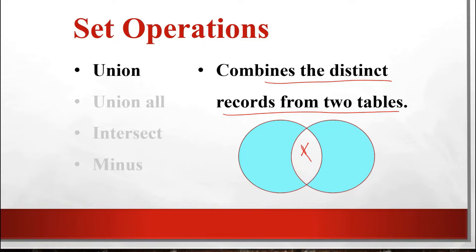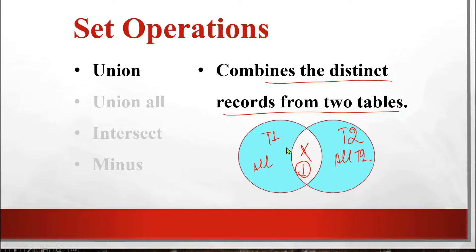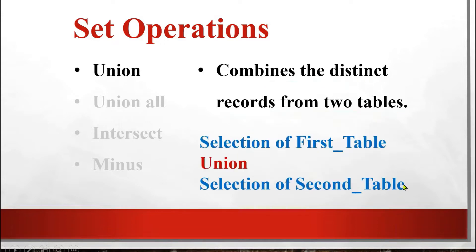Common records will appear only one time. All distinct records from table 1 and all distinct records from table 2 will be combined, and common records appear only once. The syntax for UNION is: the query selecting columns from the first table, then the keyword UNION, then the query selecting from the second table. For example: SELECT * FROM table1 UNION SELECT * FROM table2, or SELECT name FROM table1 UNION SELECT name FROM table2.